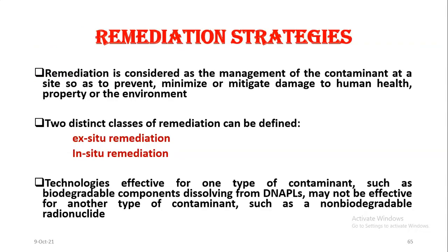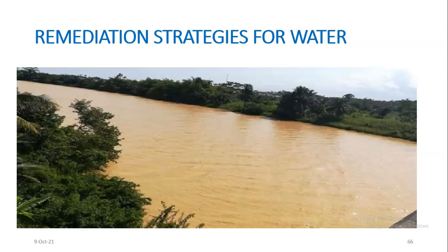We are now going to look at remediation strategies for water and soil contamination. Remediation is considered as the management of the contaminant at a site so as to prevent, minimize, or mitigate damage to human health, property, or the environment. Two distinct classes of remediation can be classified: ex-situ remediation and in-situ remediation. Technologies effective for one type of contaminant — such as biodegradable components — may not be effective for another type, such as a non-biodegradable radionuclide.